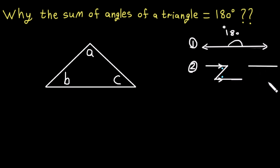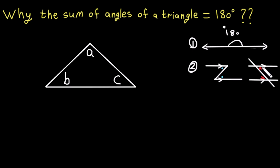If we have again two parallel lines cut by a transversal line, this angle — I'll call it x — and this angle x are equal, because alternate interior angles are equal. We can cut the extra lines to make it clear that this is like a reflected Z shape.